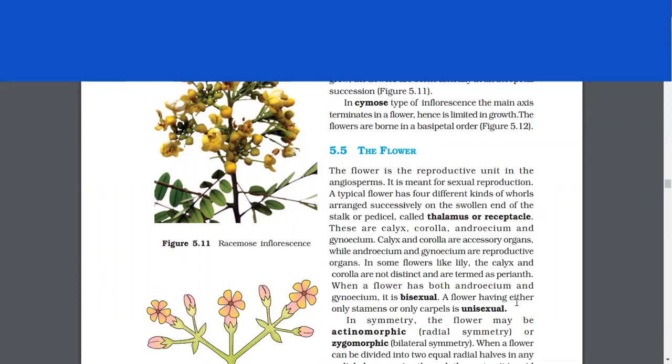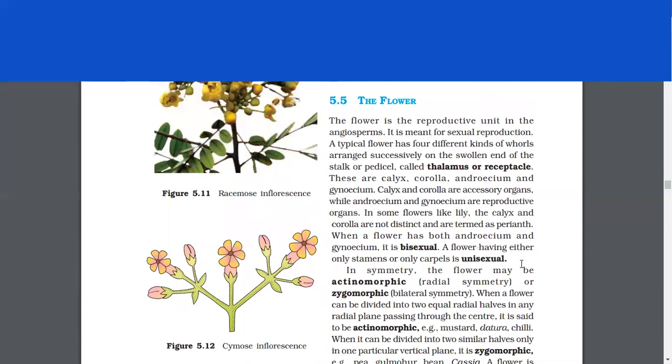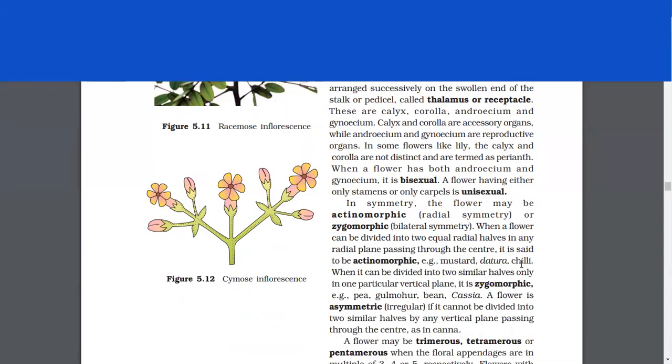The flower. The flower is the reproductive unit in the angiosperm plants. It is meant for sexual reproduction. A typical flower has four different kinds of whorls arranged successively on the swollen end of the stalk or pedicel called thalamus or receptacle. These are calyx, corolla, androecium, and gynoecium. Calyx and corolla are accessory organs, while androecium and gynoecium are reproductive organs. In some flowers like lily, the calyx and corolla are not distinct and are termed as perianth. When a flower has both androecium and gynoecium, it is bisexual. A flower having either only stamens or only carpels is unisexual.